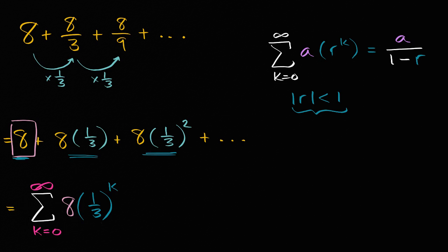But just applying that over here, we are going to get, this is going to be equal to our first term which is 8, over 1 minus our common ratio, over 1/3. And we know this is going to converge because our common ratio, the absolute value of 1/3, is indeed less than 1.